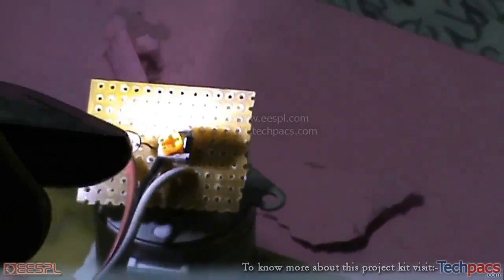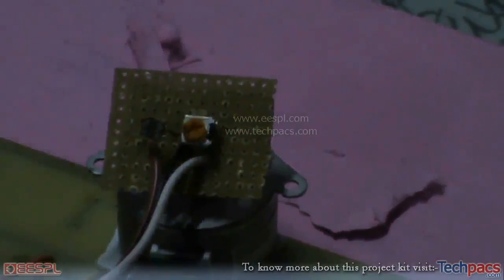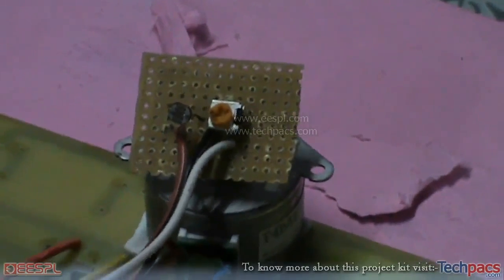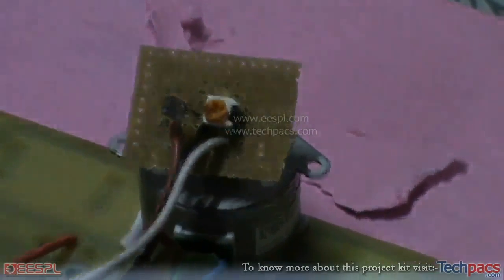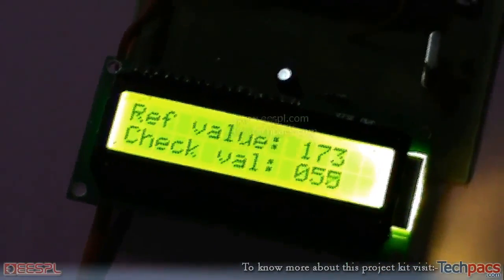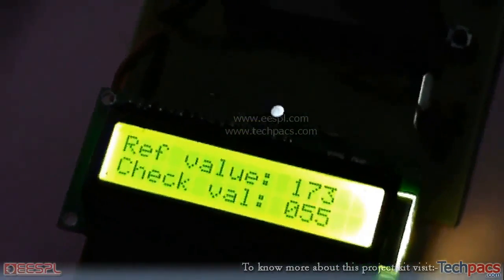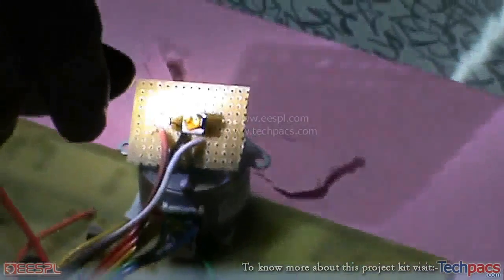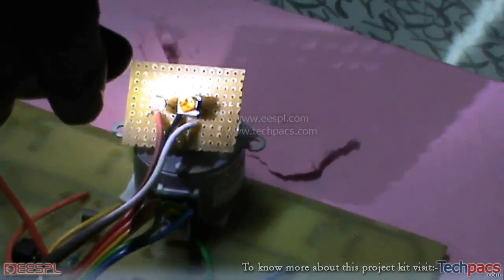If we pick the torch up, it will again start to search for the location. As you can see, it is searching again as the level has dropped down from 173 to 50. If we place the torch again and the level increases, it will stop again.